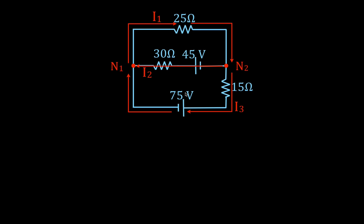I want to point out that the direction I chose for each of those currents is completely arbitrary. When we calculate the current and we get a positive answer, we'll know we chose the correct direction. If we get a negative answer, it doesn't mean the current is negative — it just means we chose the wrong direction.